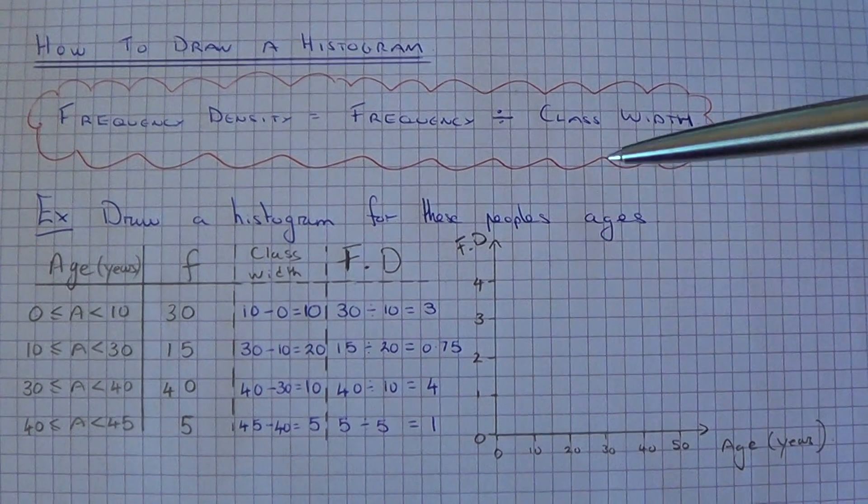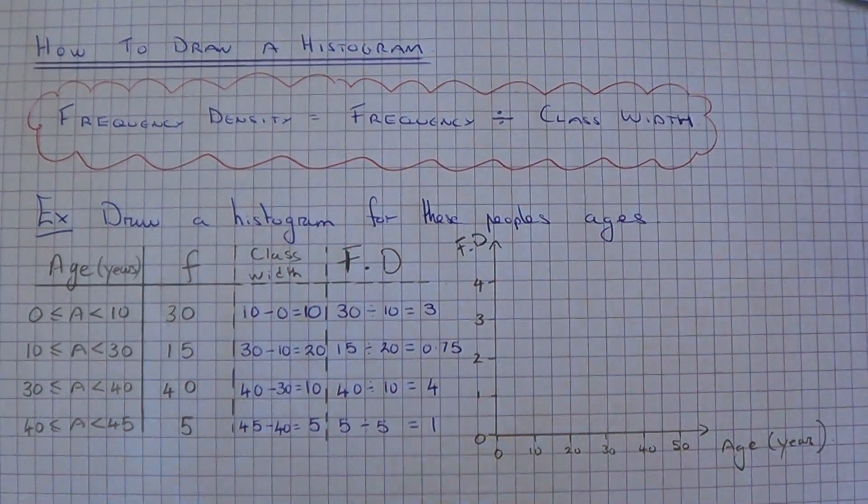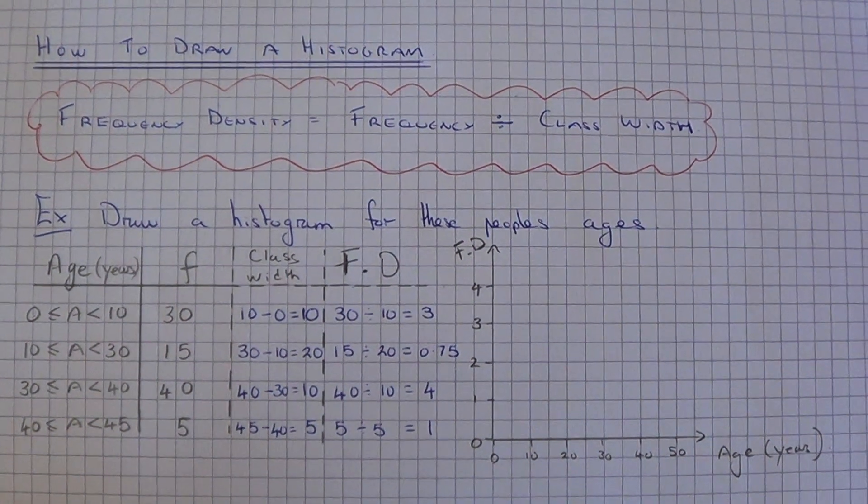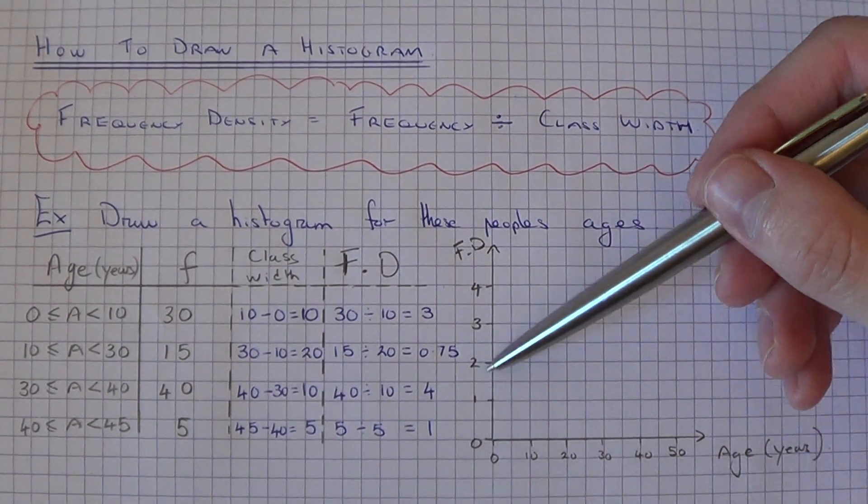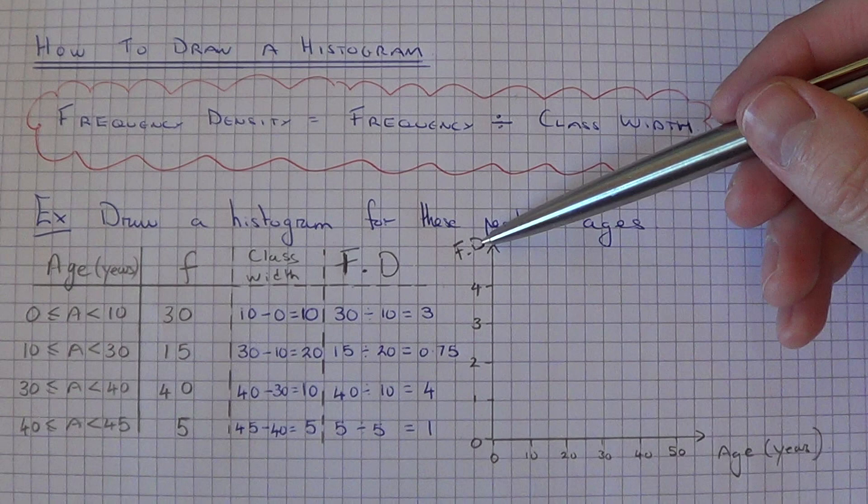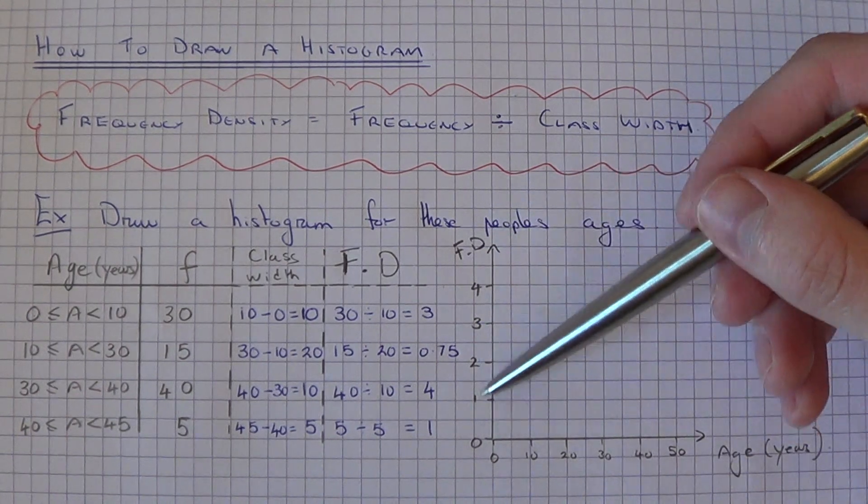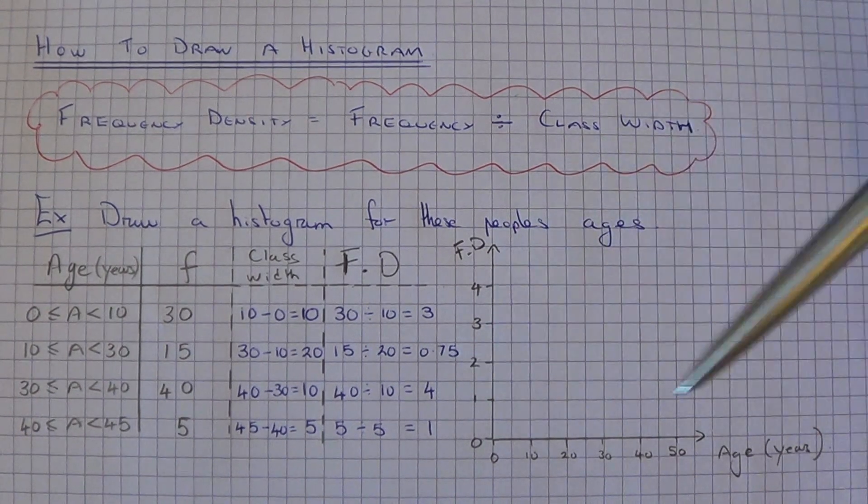So once we have the frequency density, we can then draw out the bar chart. On the y-axis, you have the frequency density, so we just need to go up to 4, because that's our highest frequency density.